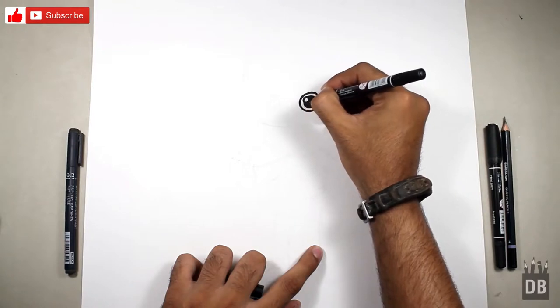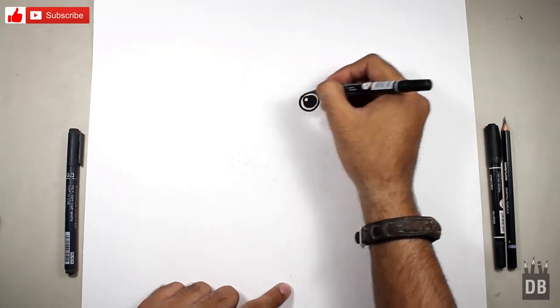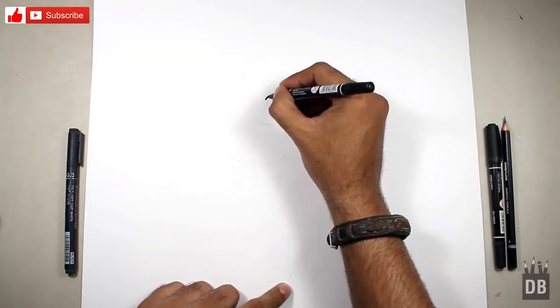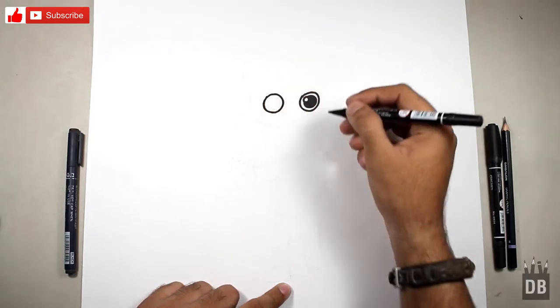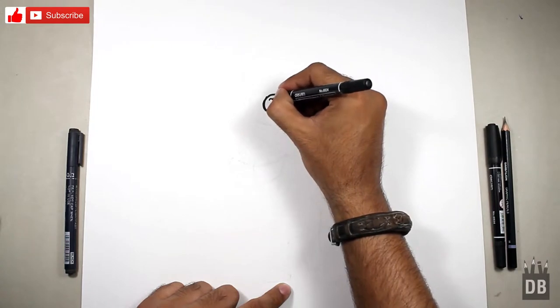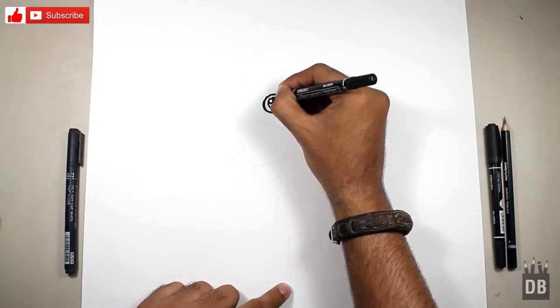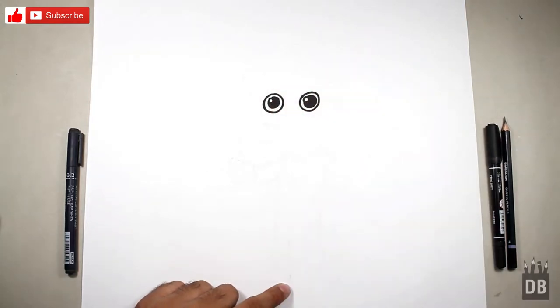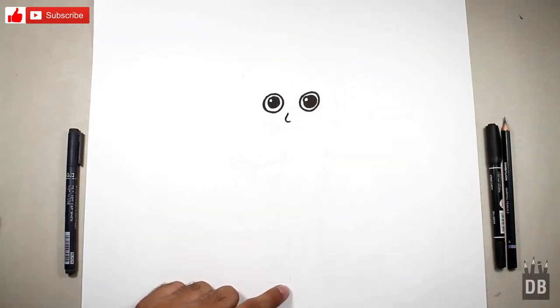This ninja is very cute. For the other eye, make another circle the same height and the same width. Add the eyeshine and the eyeball. For the nose, make a line like this and for the eyebrows.